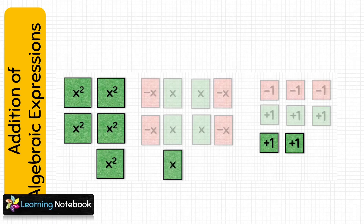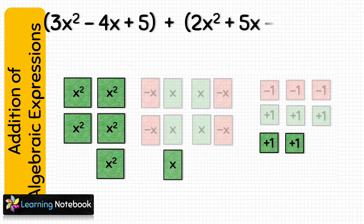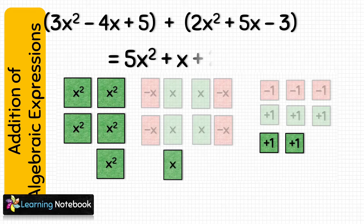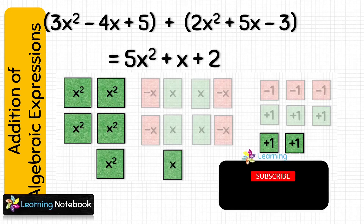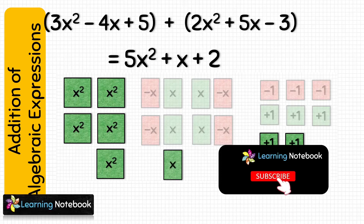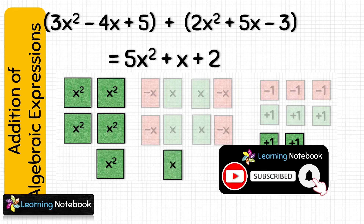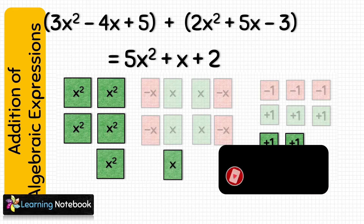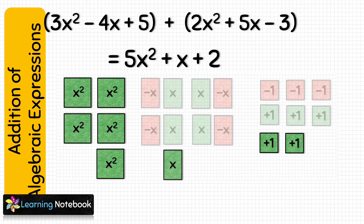So the sum of the two given algebraic expressions is 5x square plus x plus 2. This is how we can add two algebraic expressions with the help of this activity.